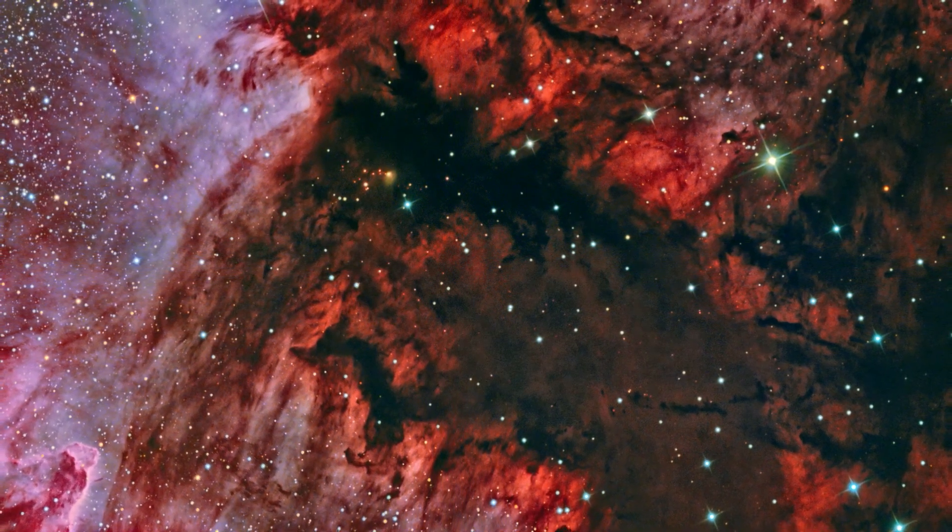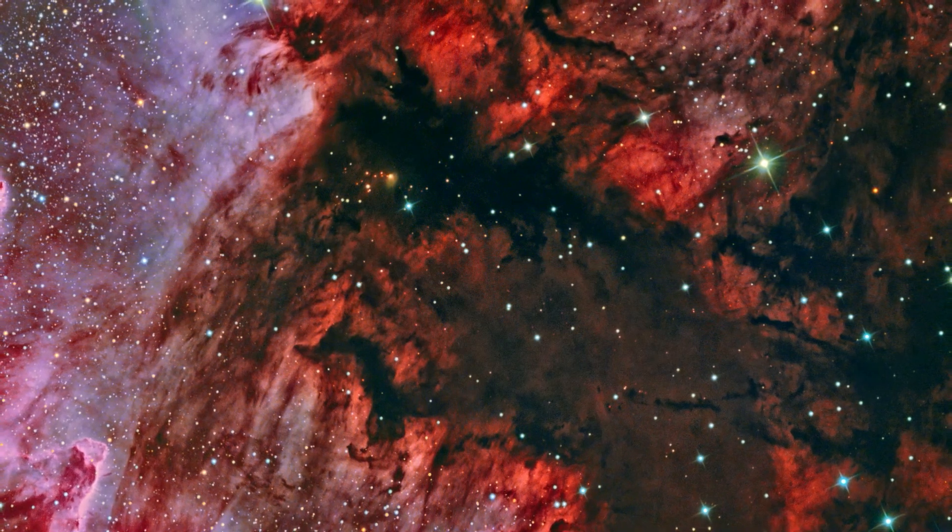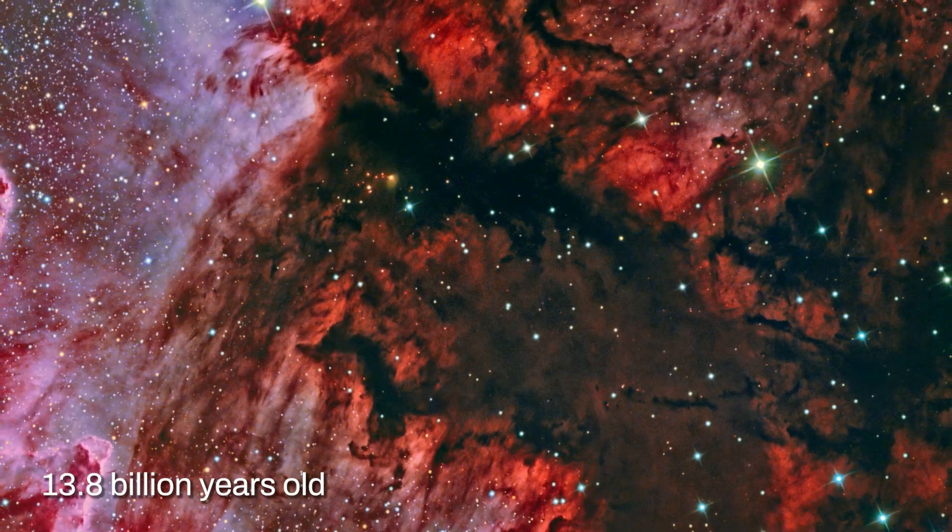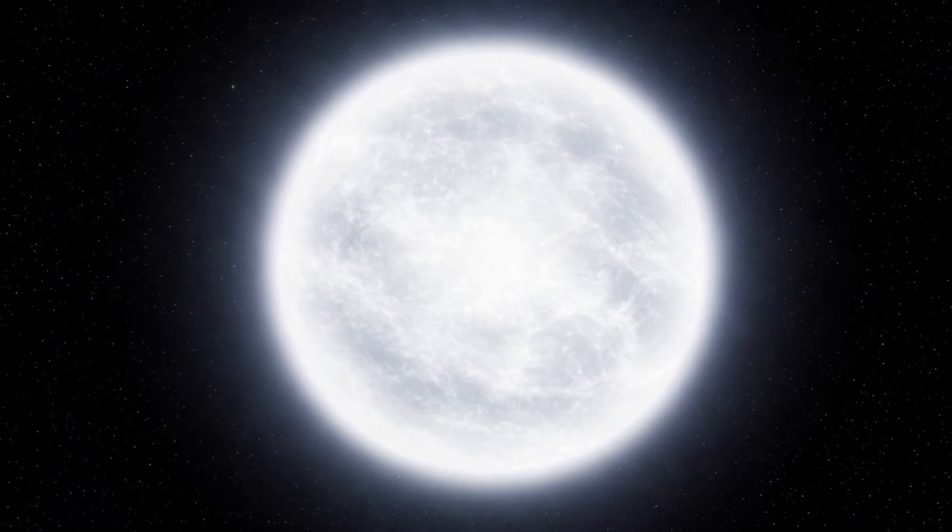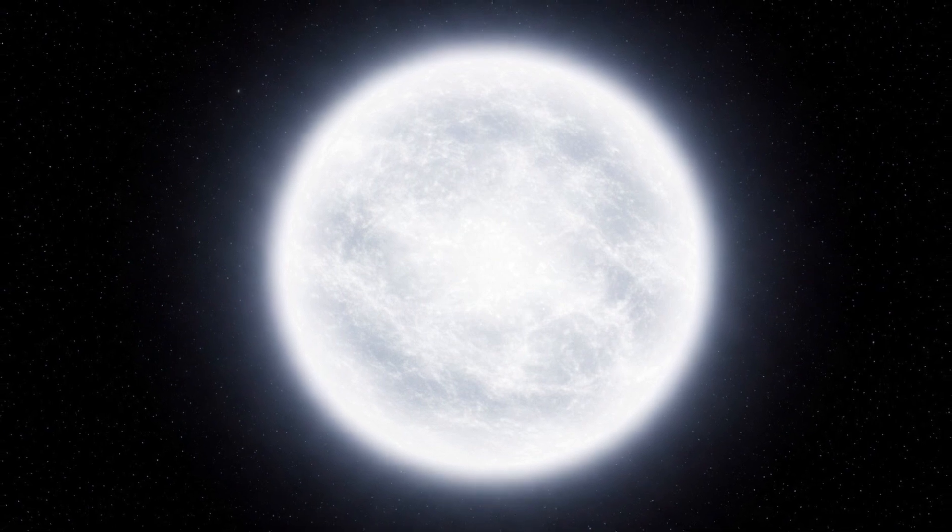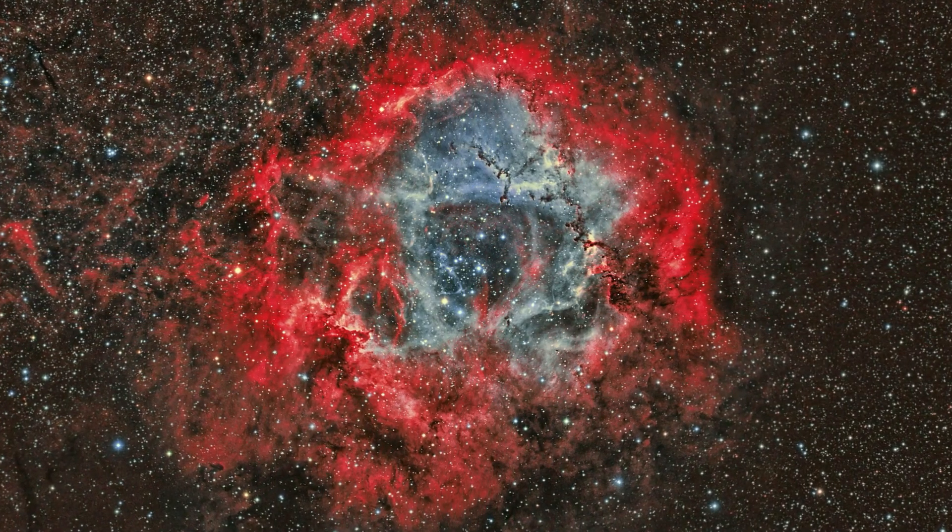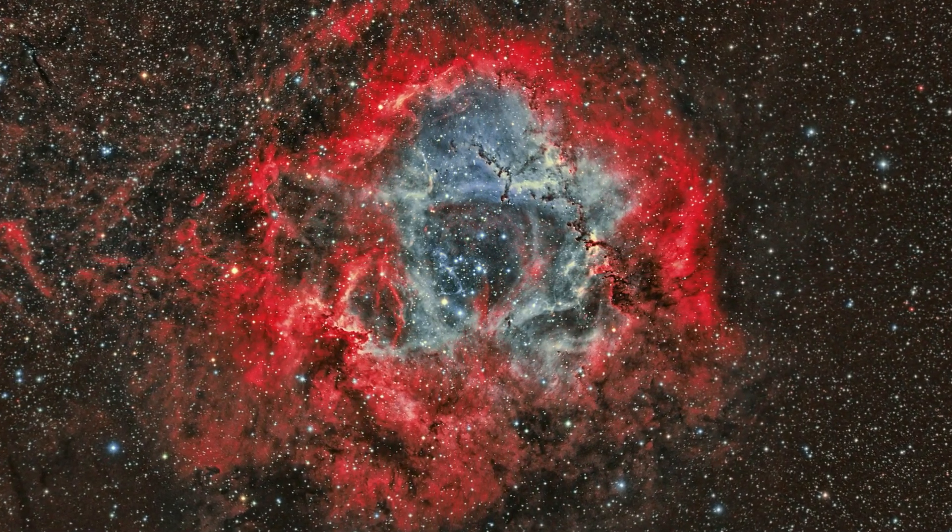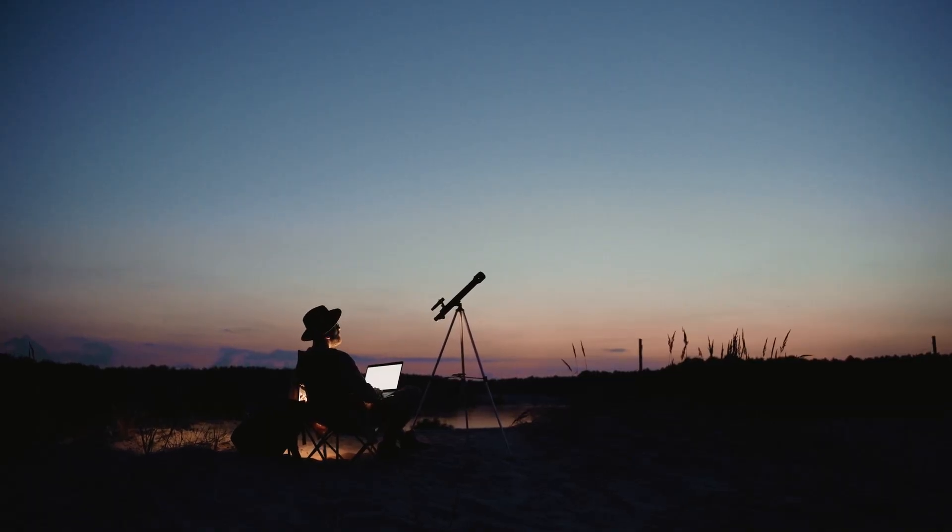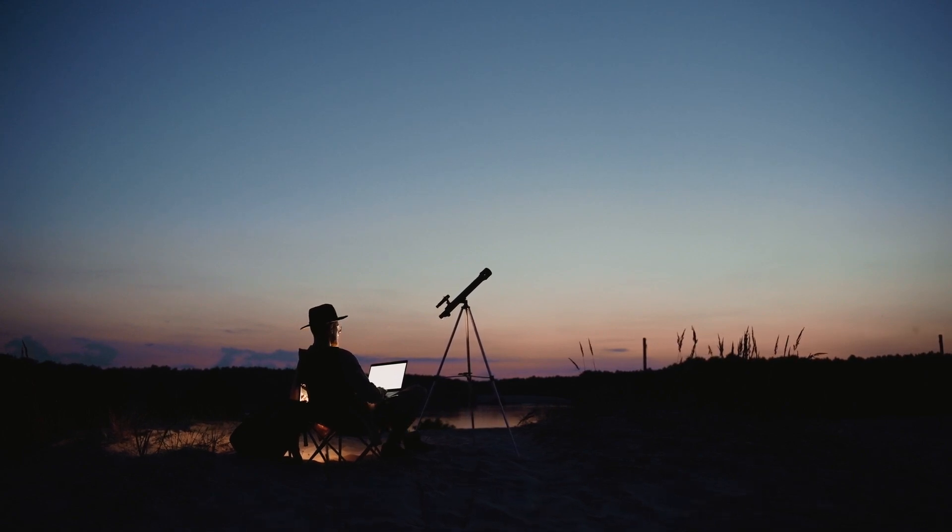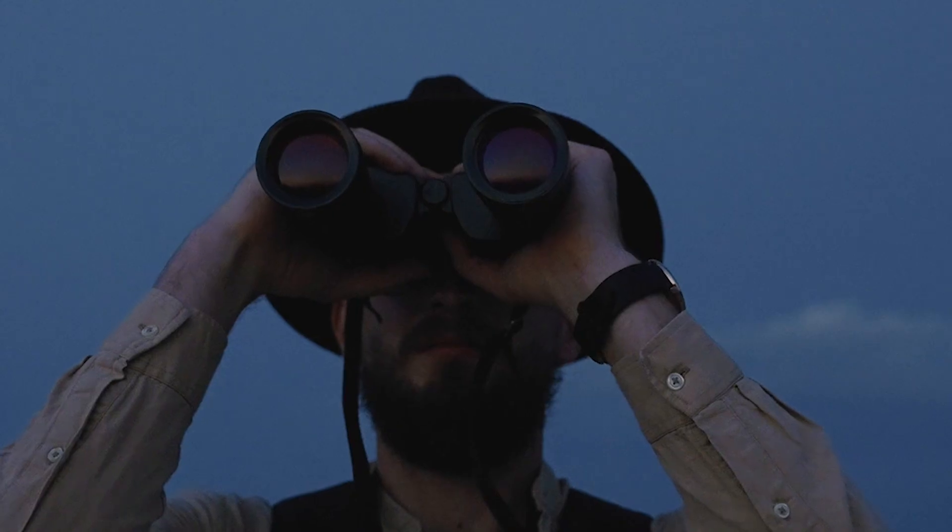This means that Methuselah can survive for such a long time that we cannot even measure it. To give us an idea, the current universe is only 13 billion years old. The lifespan of a white dwarf can exceed 10 trillion years. Methuselah, despite all its age, is still only at the beginning of its cosmic journey. This leads us to an astounding question. If the star is already so old and will still live for trillions of years, what does this tell us about time and the evolution of the universe? If today we have difficulty calculating the age of Methuselah, what will be discovered in the future when we have even more powerful telescopes?